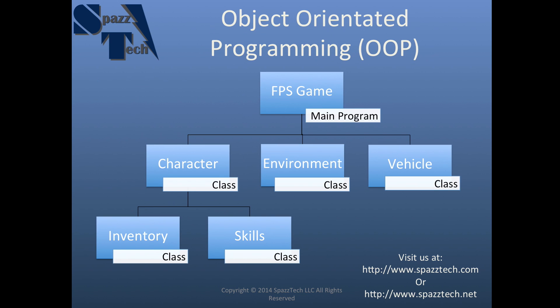Talking about classes and objects is really what object-oriented programming is about. I have a branch tree showing a hierarchy — let's go from the top. Let's assume we have a first-person shooter game; that's our program. That program is going to have classes. You're going to have characters, and characters would be represented by a character class. When the game's running, you might have a main player object made from that main player class, an environment object created from the environment class, and maybe a vehicle object created from the vehicle class.